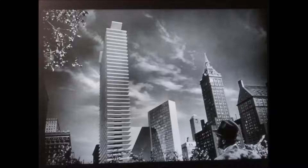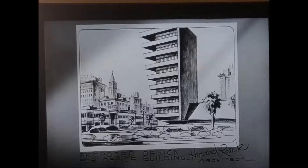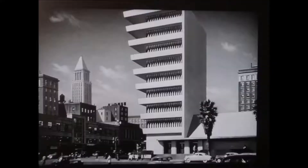Frank Lloyd Wright's architecture is all about rectangles — nothing round, nothing curved. It's just a series of plates, one on top of the other. And that's what you see in the architecture in the film The Fountainhead: a series of rectangles and plates, one piled on top of the other.